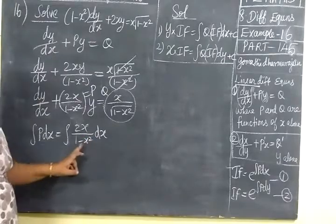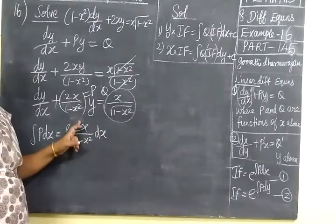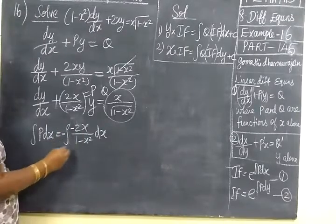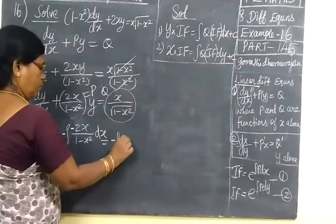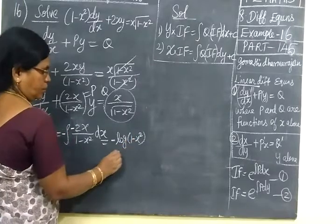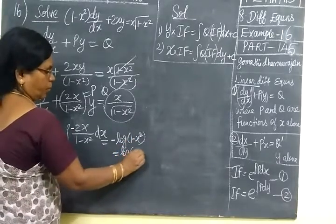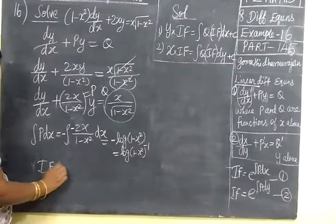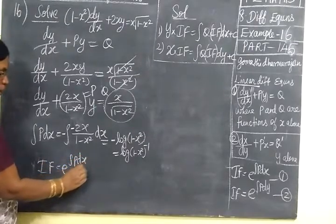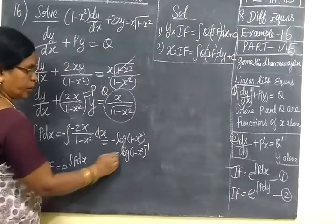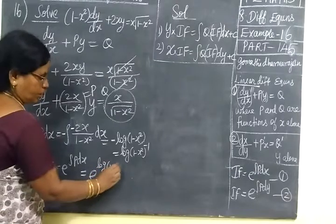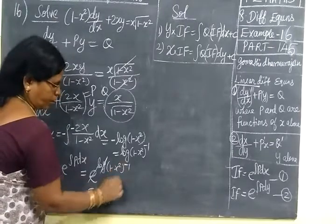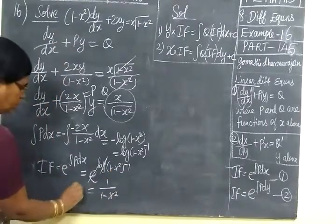If the differentiation of the denominator appears in the numerator, we can write the log of the denominator. But here minus 2x is present, so we write a minus sign outside. This equals minus log of 1 minus x squared, which equals log of (1 minus x squared) to the power minus 1. So the integrating factor is 1 by 1 minus x squared.